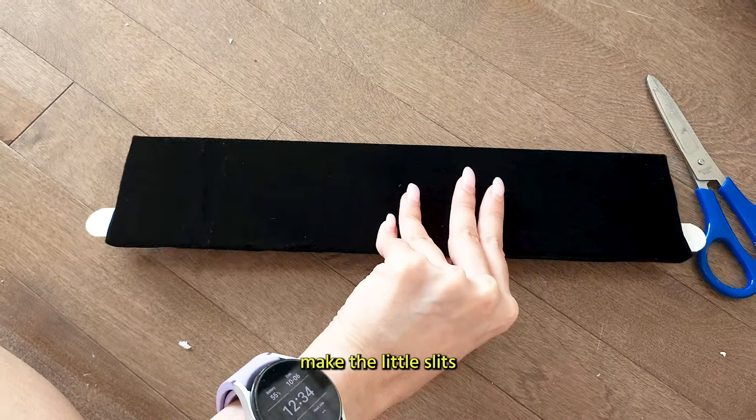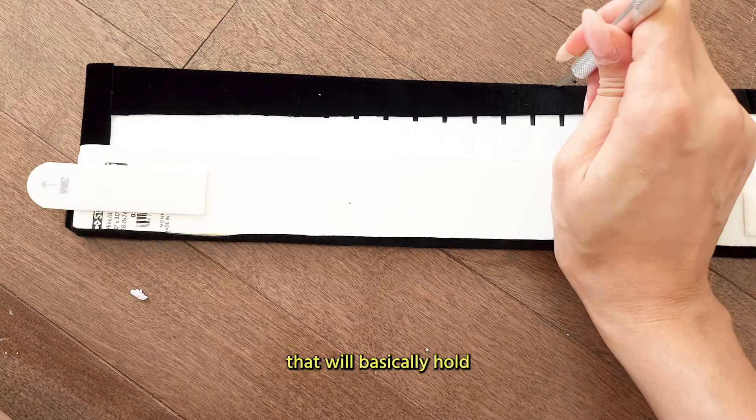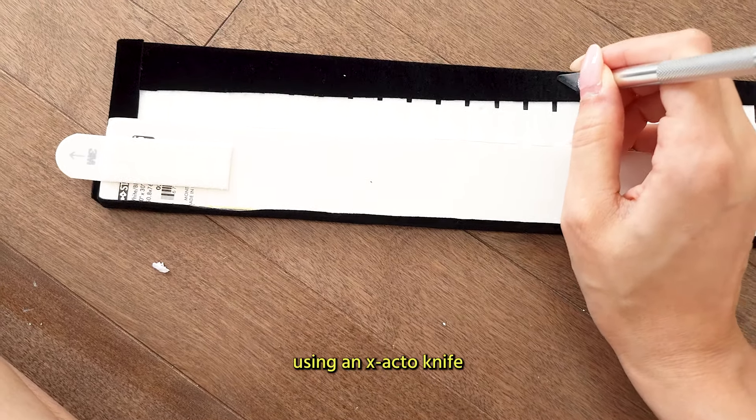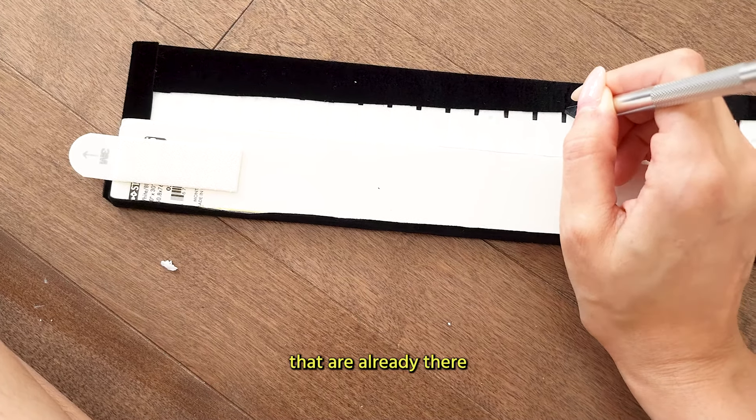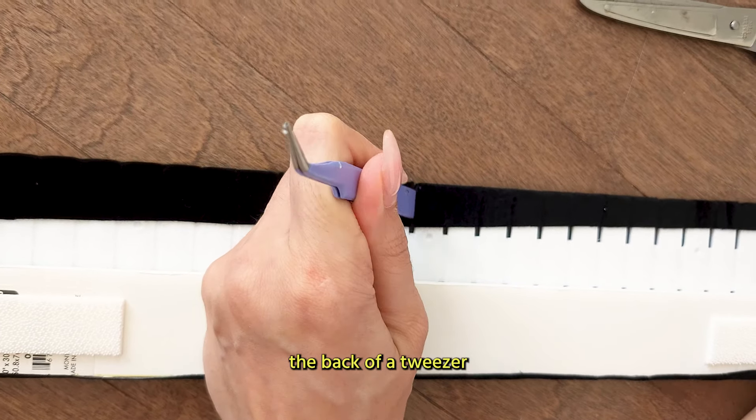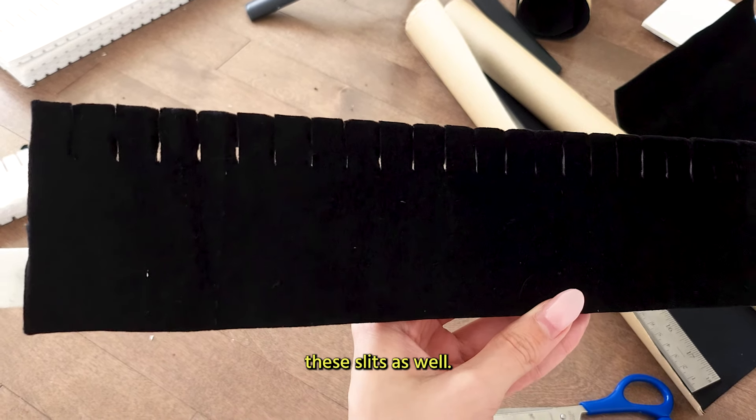Now we're going to make the little slits that will basically hold all these earrings. So I'm using an exacto knife to cut along the lines that are already there. I'm just taking the back of a tweezer and then I'm expanding these slits as well.